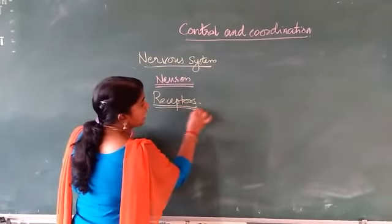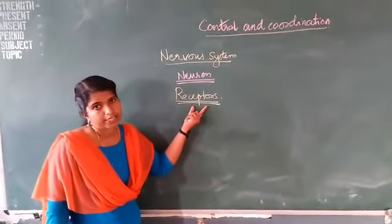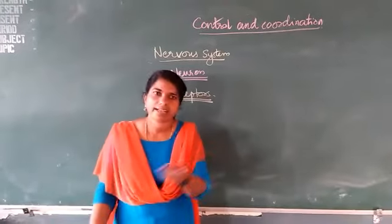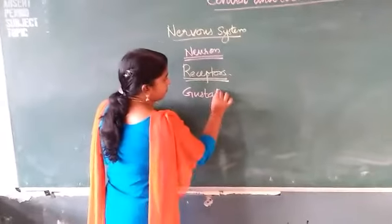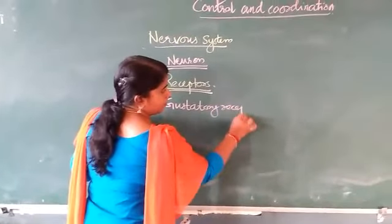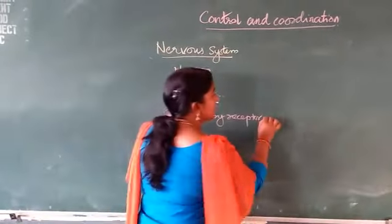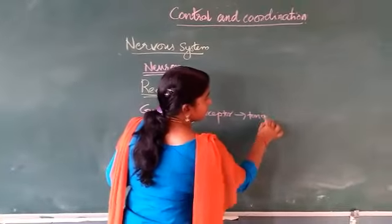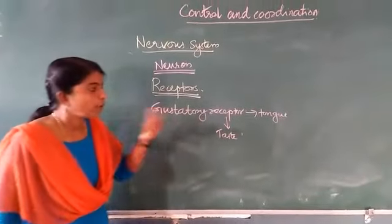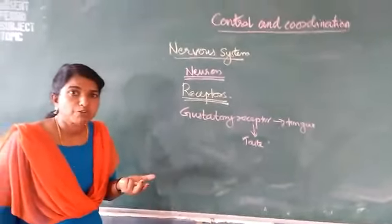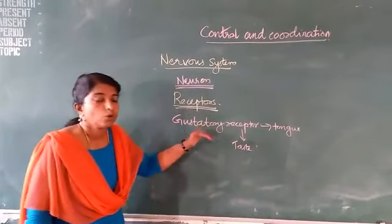Receptors are specialized nerve cells. Normally these are located in our sense organs — in our ear, nose, tongue, etc. For example, gustatory receptors. These receptors are located in the tongue, which help to detect taste. So how can we recognize the taste of food? Because these receptors are there in our tongue, which help to detect this.